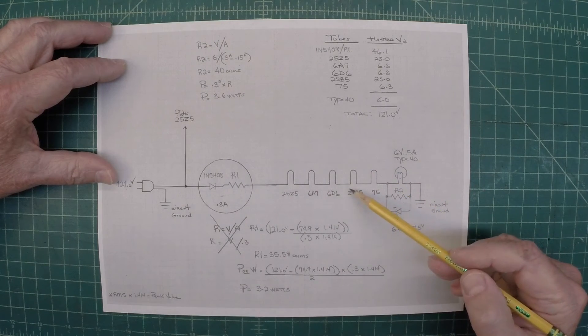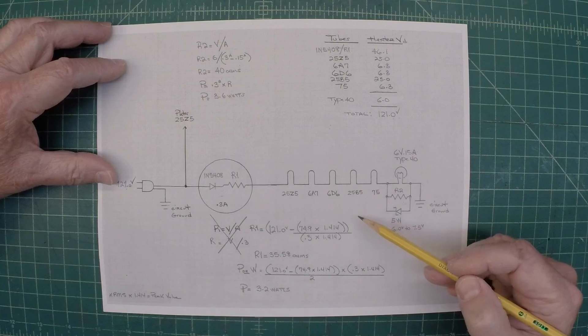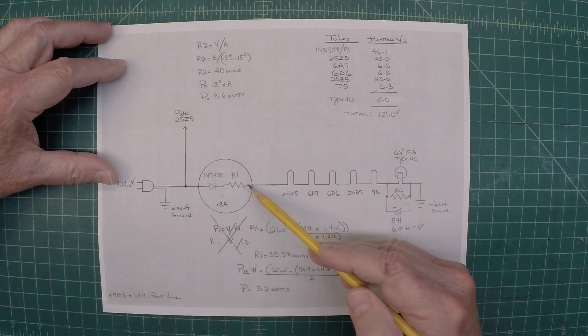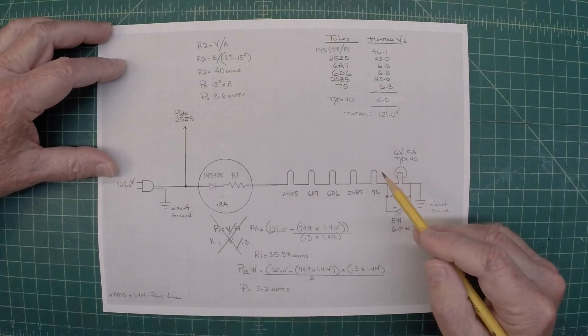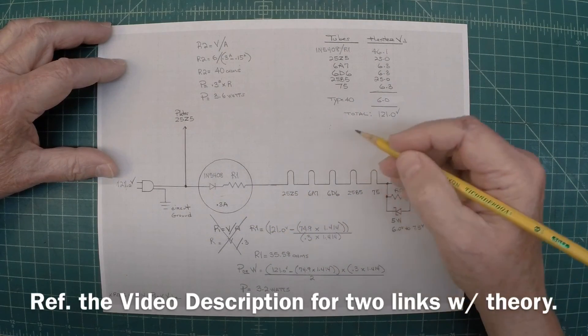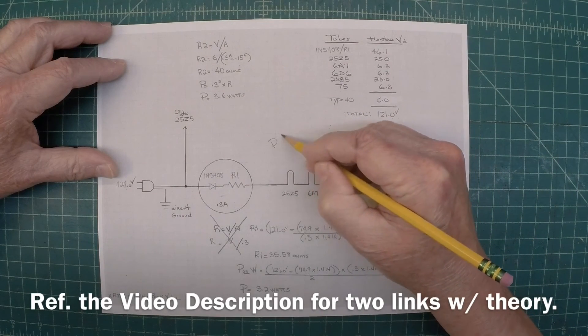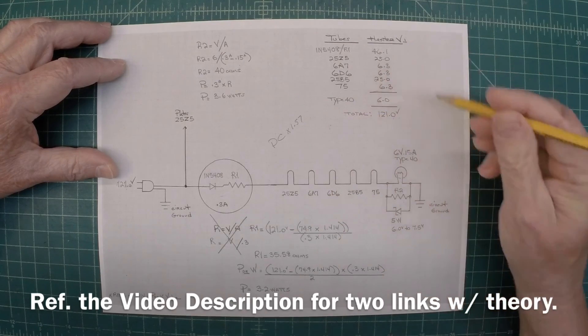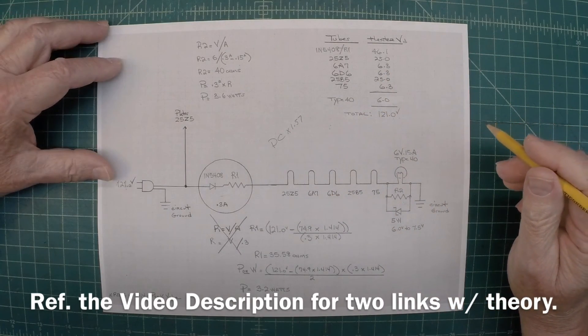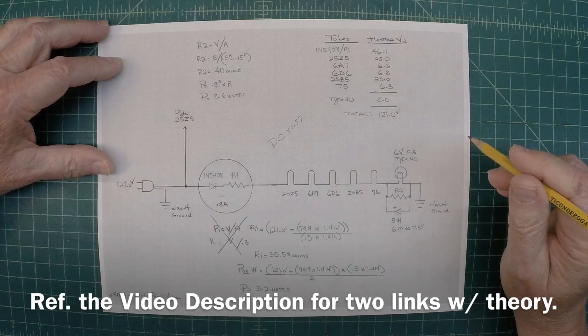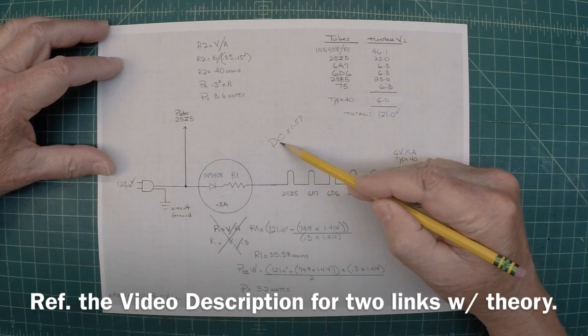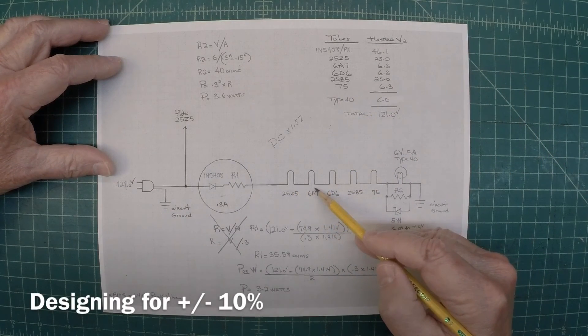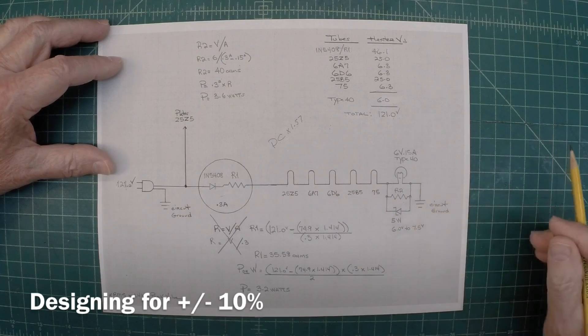Now, one thing I don't have noted on here that I should have. When you're measuring the voltage, of course, through the diode and resistor, you're going to use the DC scale of the meter. And you'll just multiply your DC times 1.57. And that will give you the equivalent RMS voltage, AC RMS voltage. So DC times 1.57 to measure your new heater voltages accordingly.